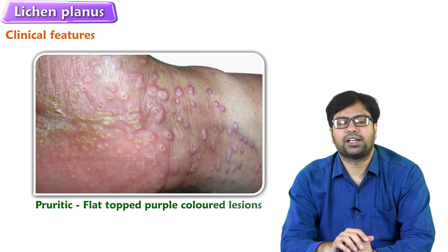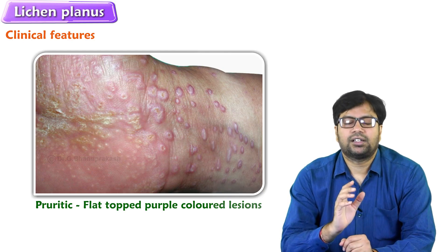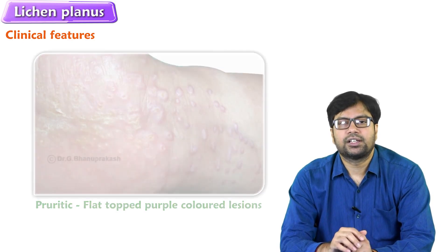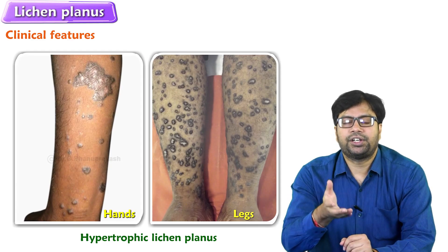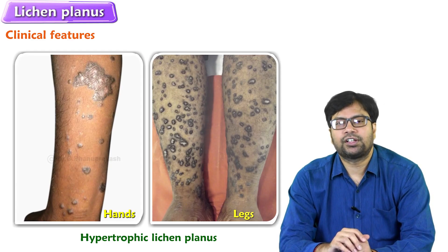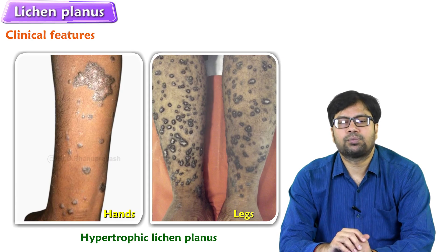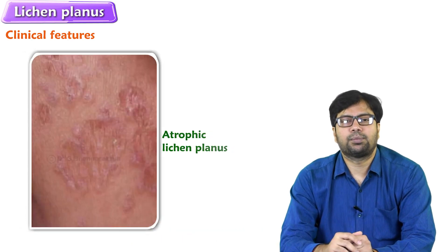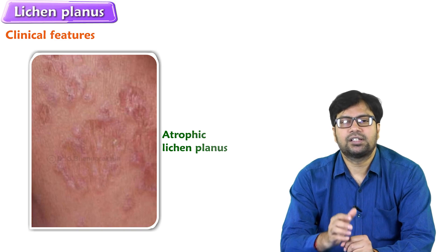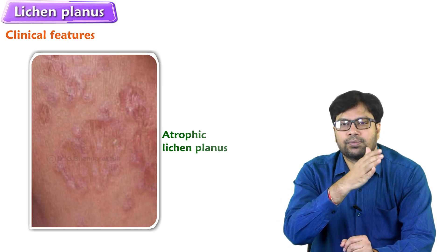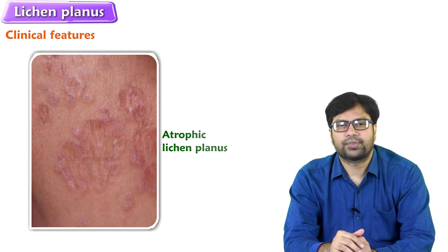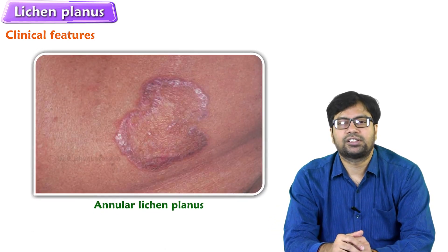There are different types of lichen planus. Hypertrophic, which means elevated — the site of hypertrophic lichen planus is most probably seen on the hands and legs. Atrophic lichen planus — atrophic means it is like skin which has been damaged, which is below the level of the normal skin.